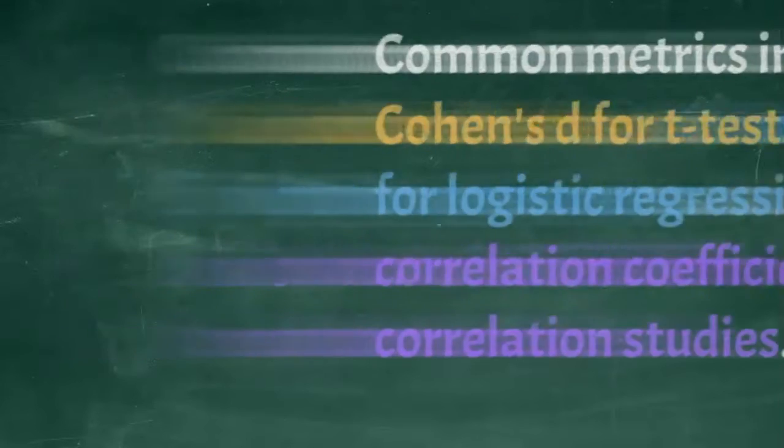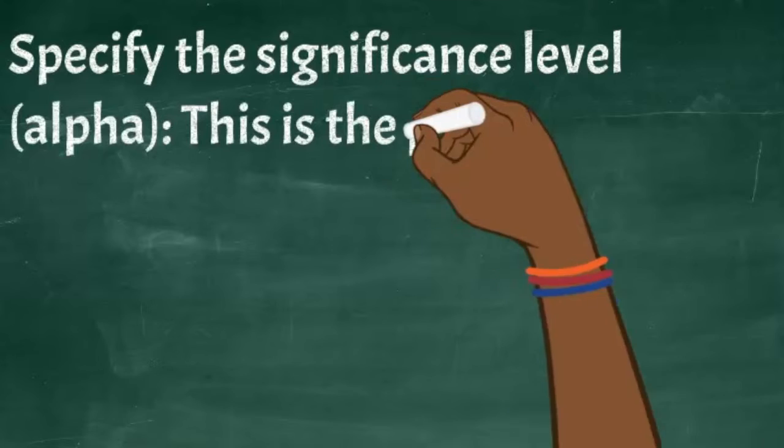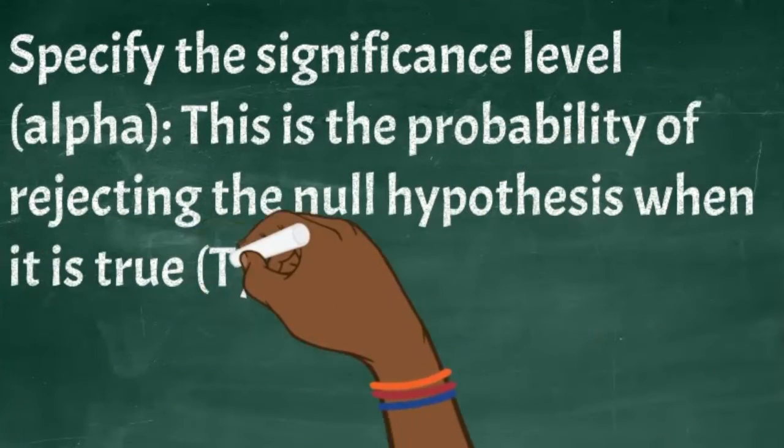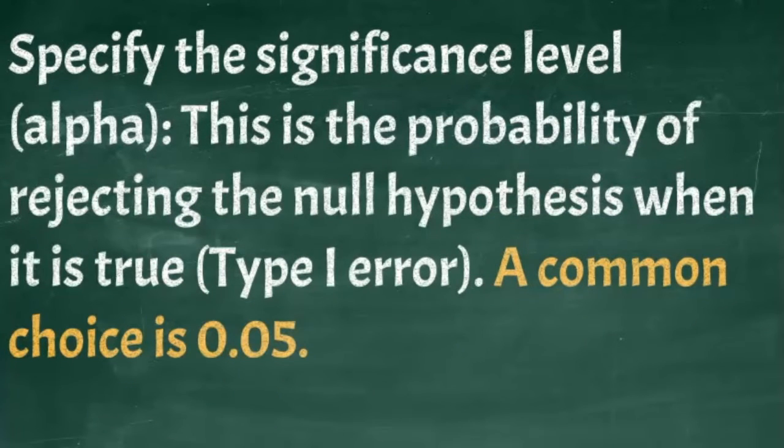Next step is to specify the significance level when you are defining the research hypothesis. Specifying the significance level, this is determining the probability of rejecting the null hypothesis when it is true. So your Type I error. A common choice, as we all know, is 0.05.